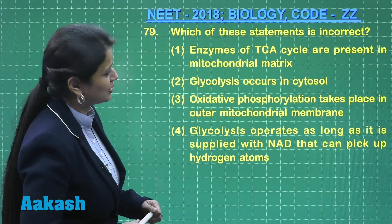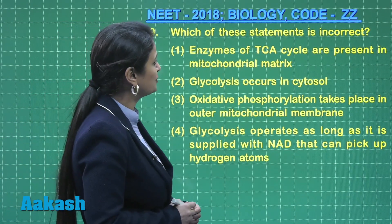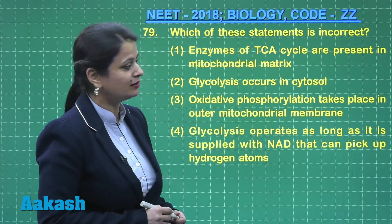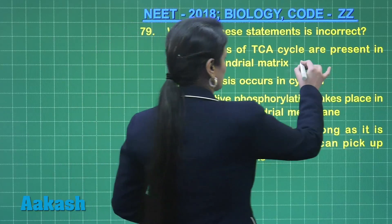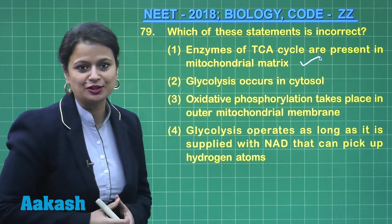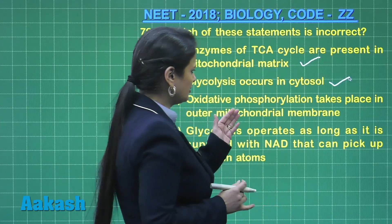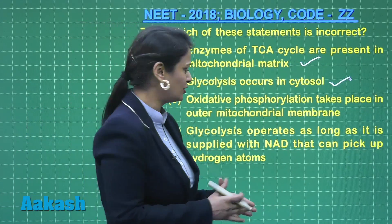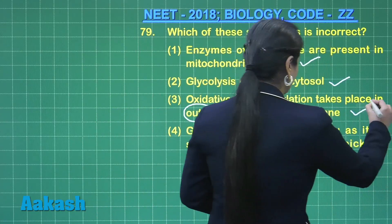Question number 79: which of the statements is incorrect? Coming to the first one — enzymes of TCA (tricarboxylic acid) cycle, that is Krebs cycle, are present in the mitochondrial matrix. This is quite right. Glycolysis occurs in the cytoplasm — this is also right. Oxidative phosphorylation takes place in the outer mitochondrial membrane — it is not the outer, it is the inner mitochondrial membrane, so this is wrong.